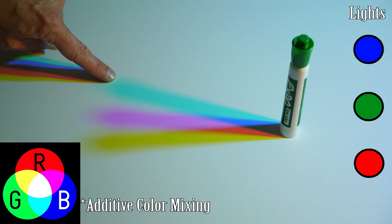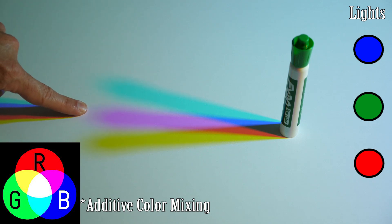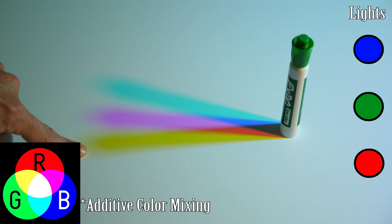So cyan is made when you mix green plus blue light. Magenta is made when you mix blue plus red light. And then yellow is made when you mix green plus red light.